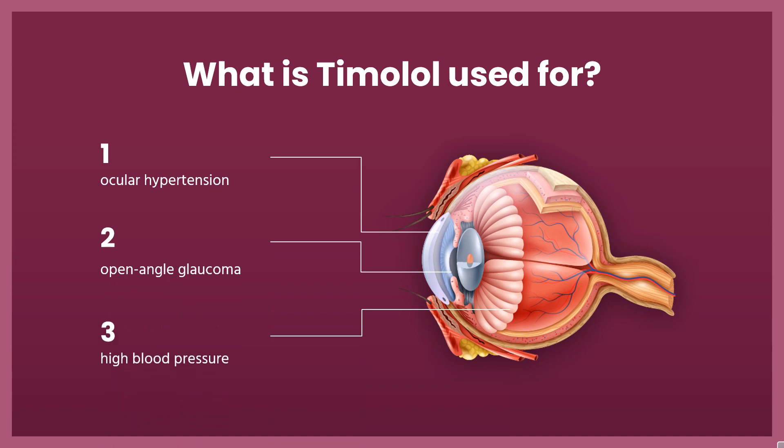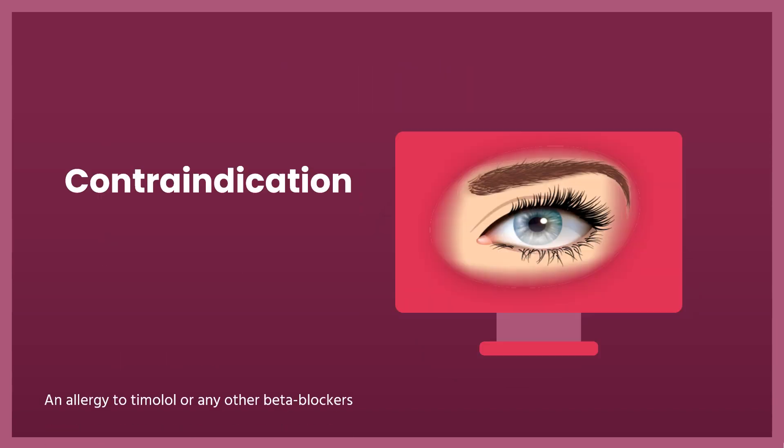Ophthalmic Timolol is indicated for the treatment of increased intraocular pressure in patients with ocular hypertension or open-angle glaucoma. The oral form of this drug is used to treat high blood pressure. In certain cases, Timolol is used in the prevention of migraine headaches.